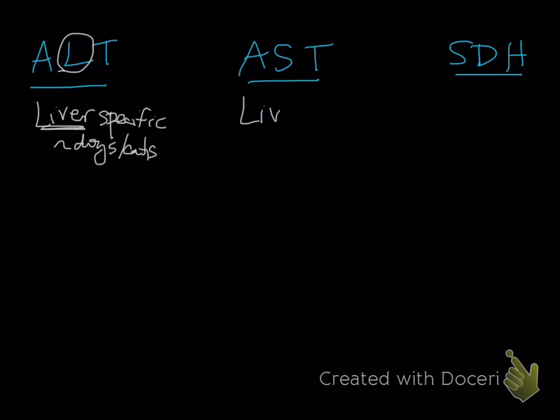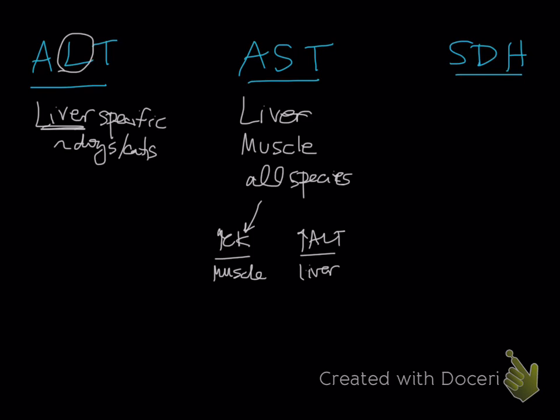AST, we already talked about this. This is liver and muscle, all species. What does that mean? If it's increased and you don't have anything else, you don't have a CK in a large animal, and if you don't have an ALT in a small animal, you won't know what it is. So you need to look at other things. If CK is increased, that would support muscle in any species. If ALT is increased, that would support liver. You have to look at the company it keeps. Of course, you can have both diseases going on.